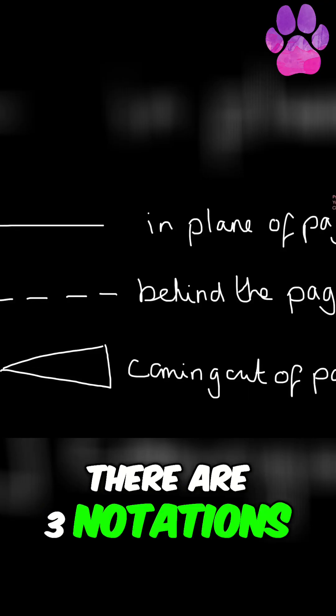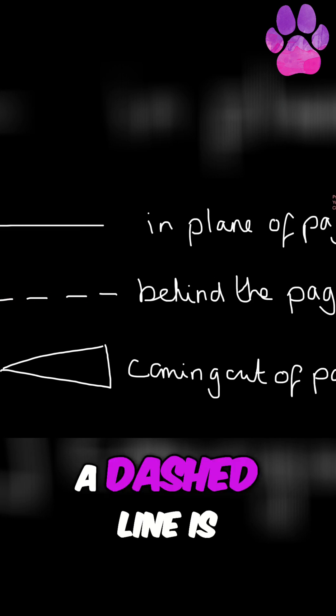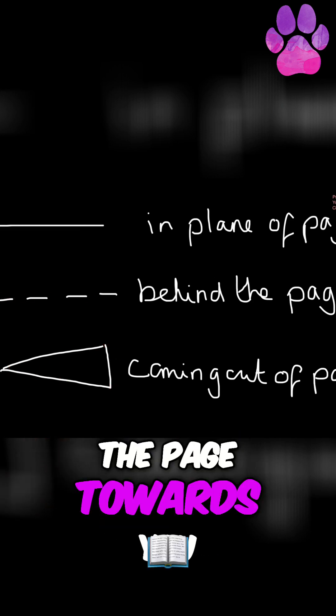There are three notations you need to know for this. A straight line is in the plane of the page, a dashed line is behind the page, and then a wedge is coming out of the page towards you.